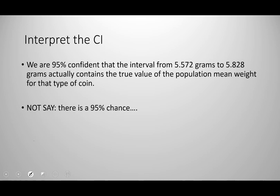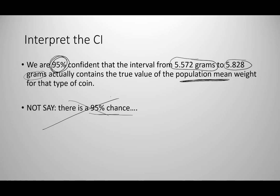When interpreting a confidence interval, the standard phrasing is: we are 95% confident that the interval from 5.572 grams to 5.828 grams actually contains the true value of the population mean weight for that type of coin. We do not say there is a 95% chance it falls between those values, because that would imply random chance — but the population mean is a concrete value, not subject to chance.